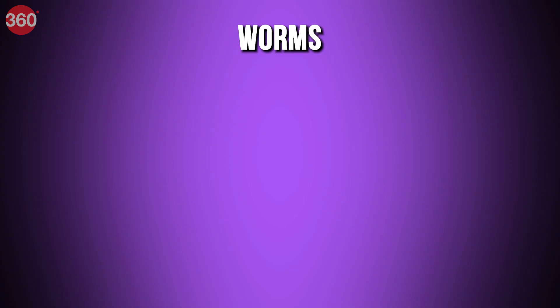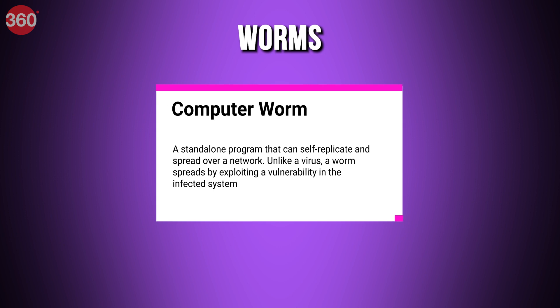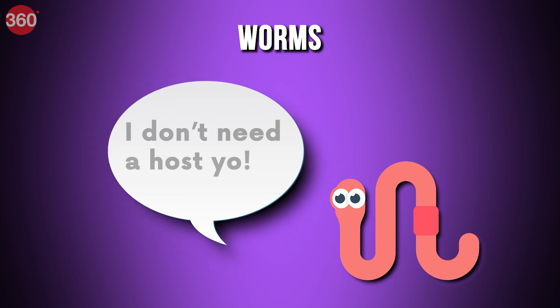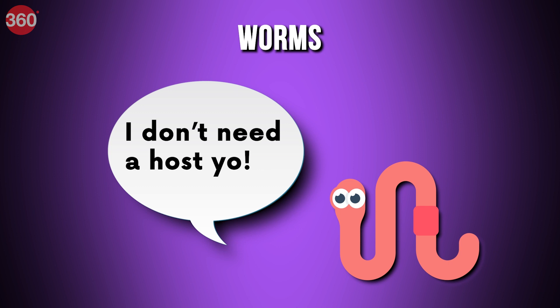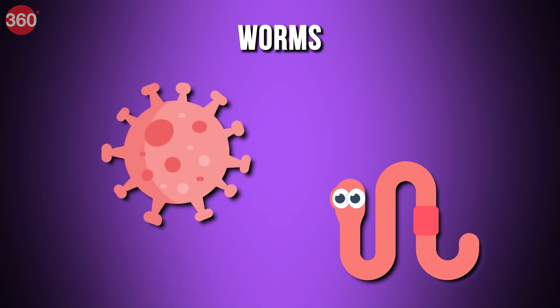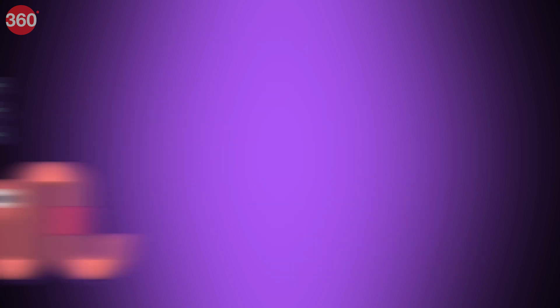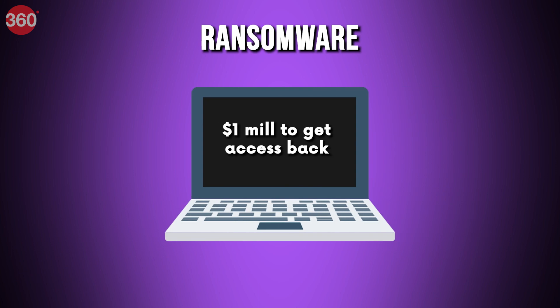While those were just viruses, there are also other forms of malware. Worms are standalone programs that can self-replicate and spread over a network. Unlike a virus, a worm spreads by exploiting a vulnerability in the infected system. The biggest difference is that worms can replicate without a host system and do not require you to trigger them — they can also be passed on via FTP servers and public networks.